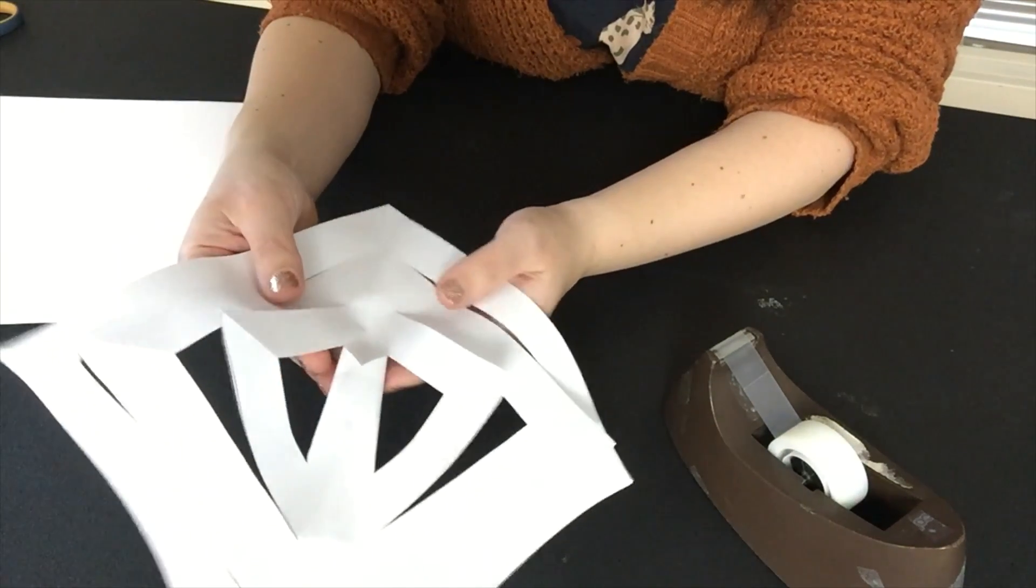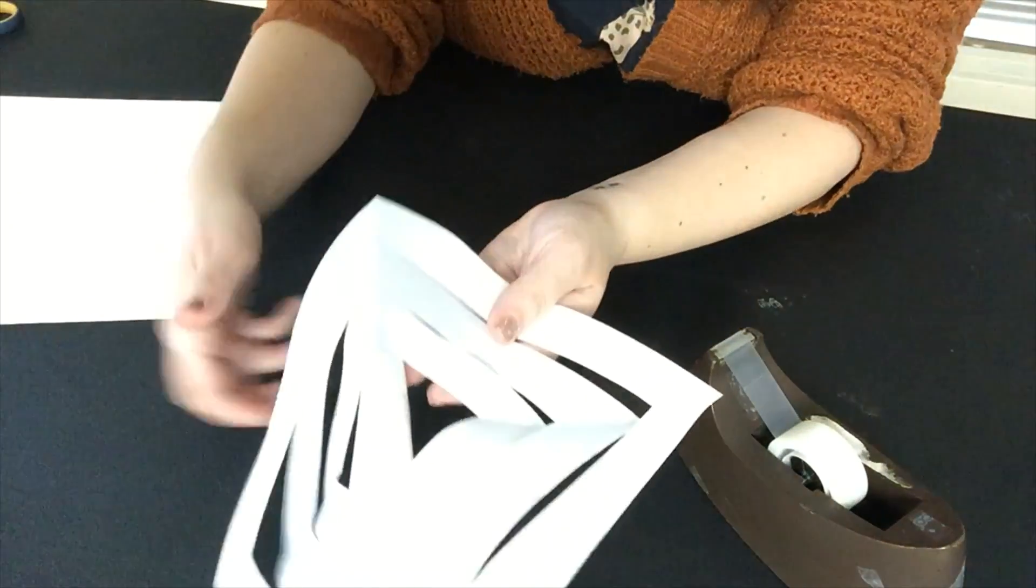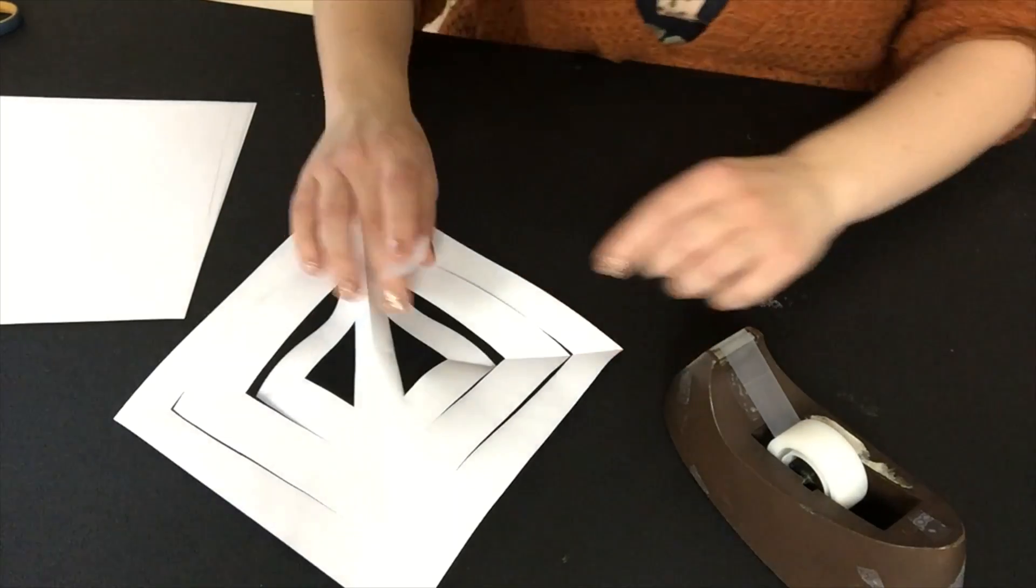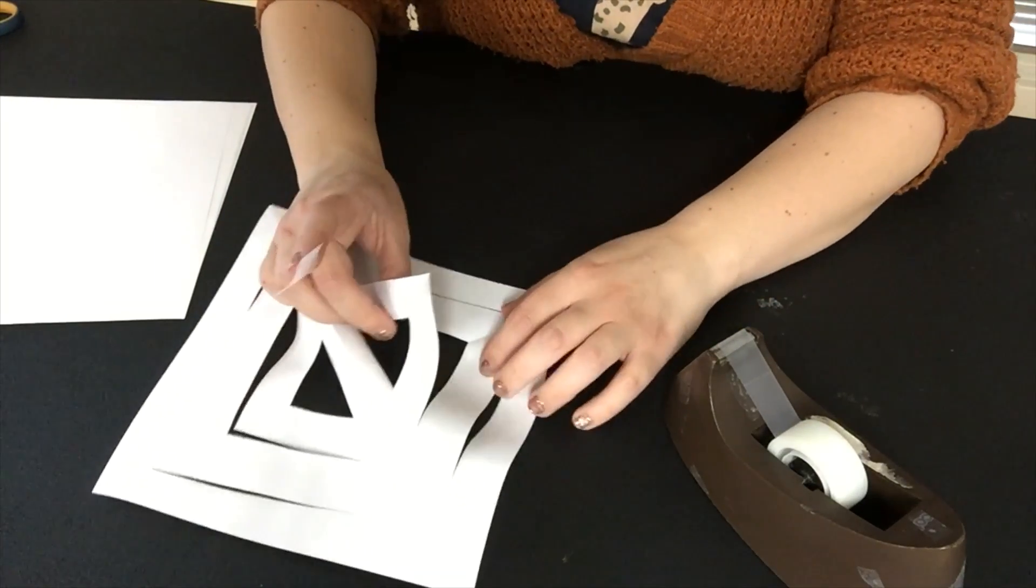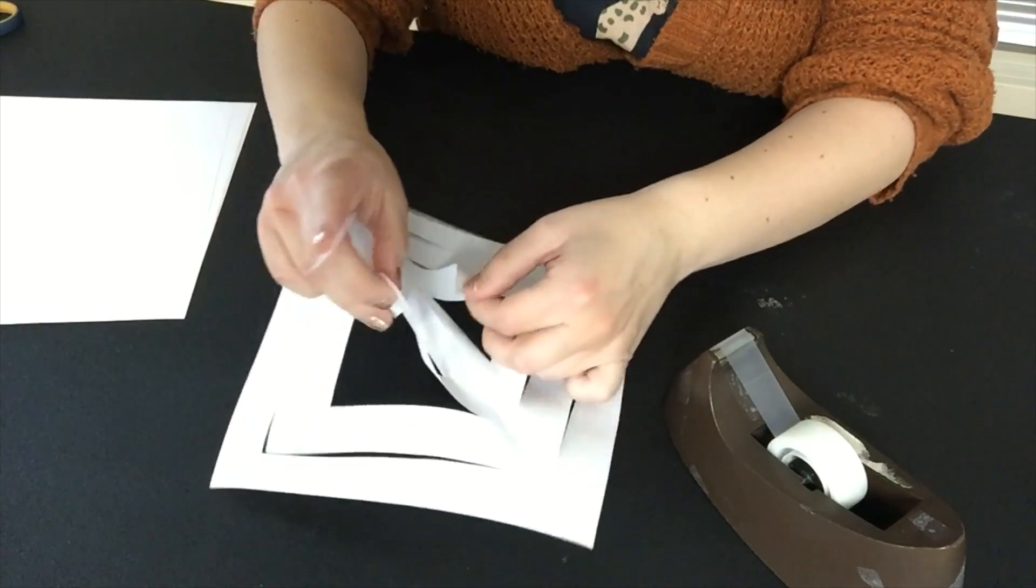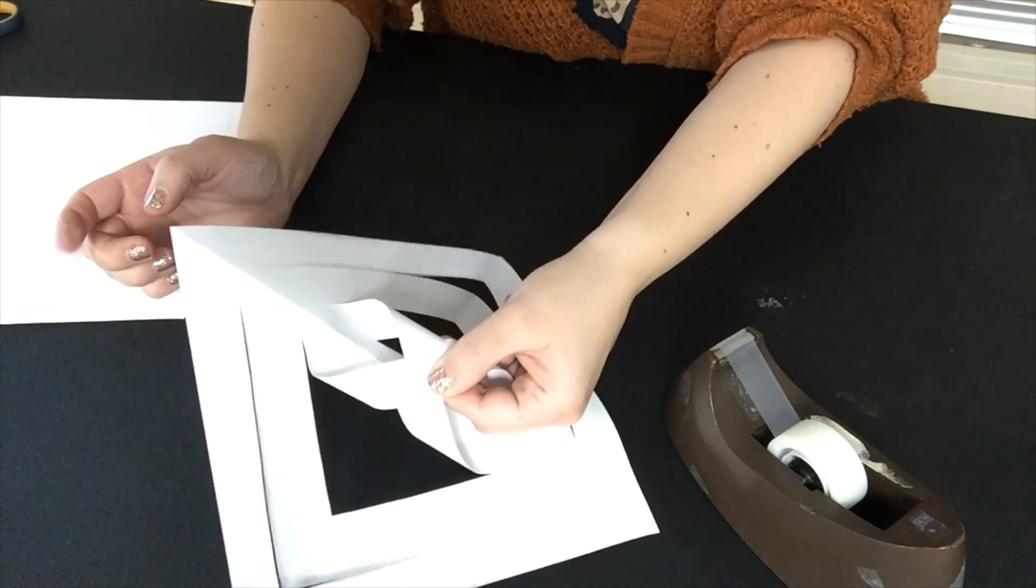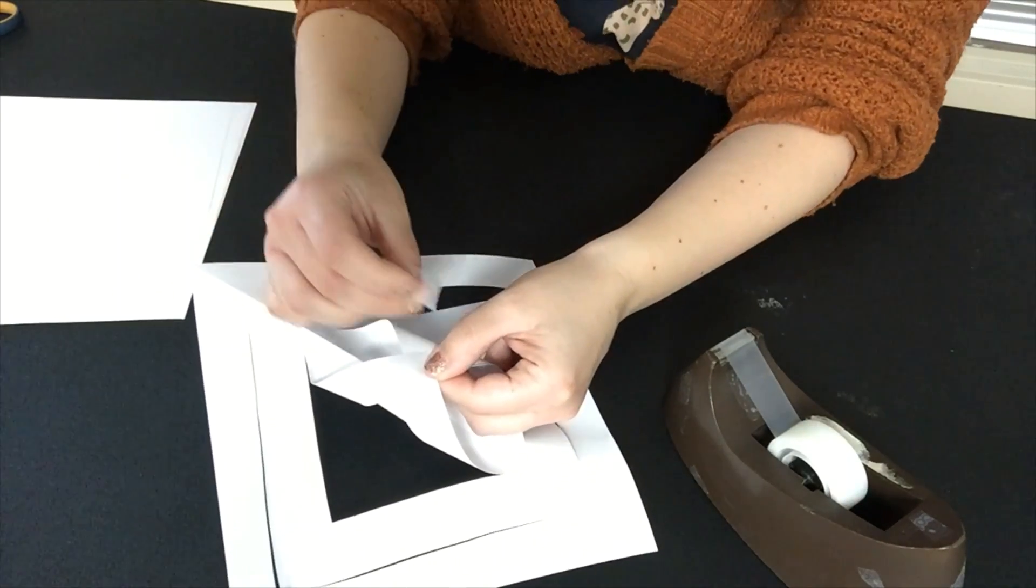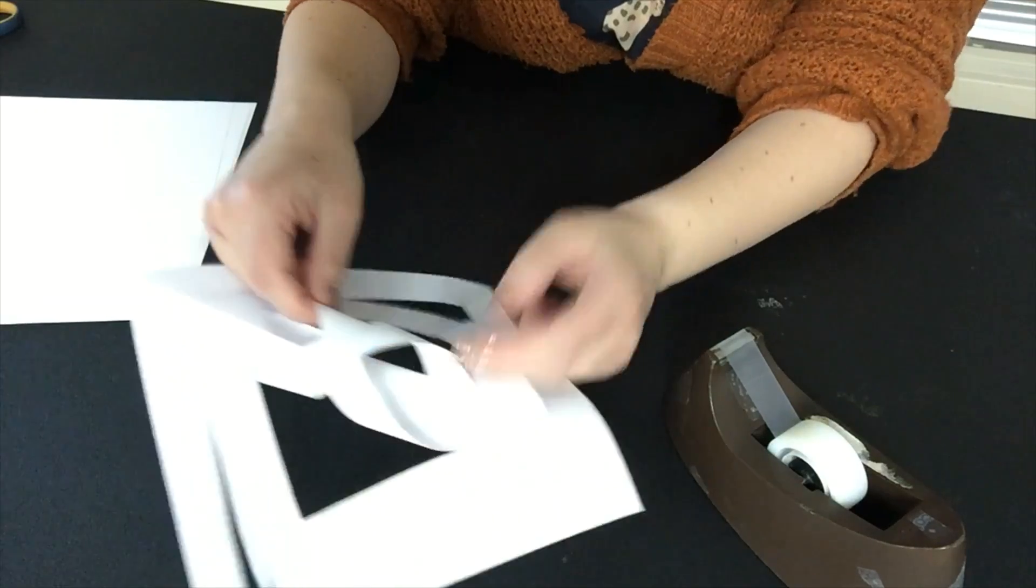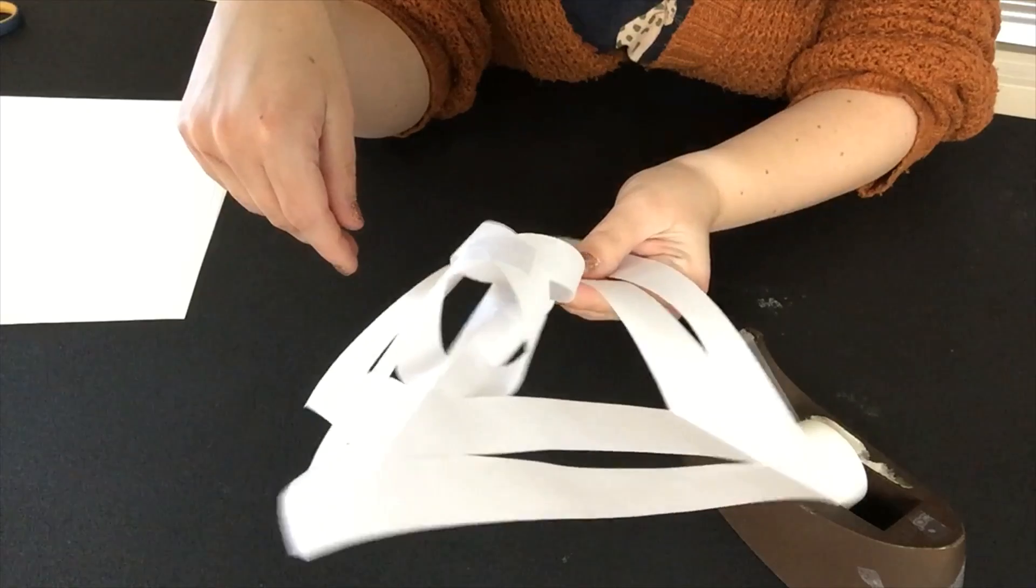Okay, so after you've done that you're gonna flip it over and then do a similar step with the next two pieces. These are the next one, same thing, you put them together like so and you tape them or glue them.